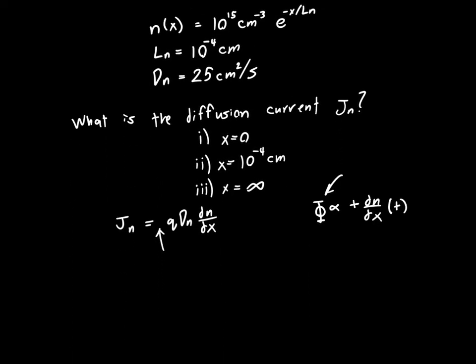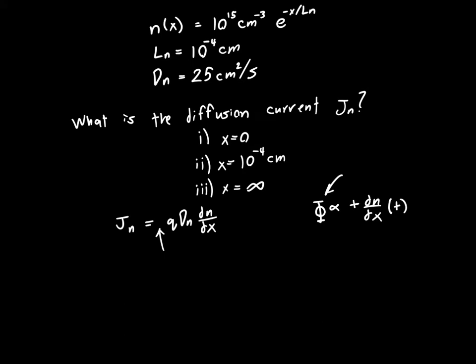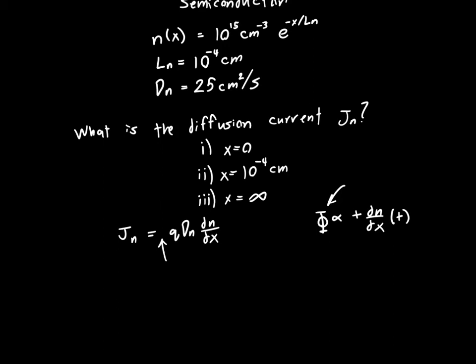So if we actually differentiate this equation that we have above, the carrier concentration that we're given, dn of x dx. And we know n of x above.